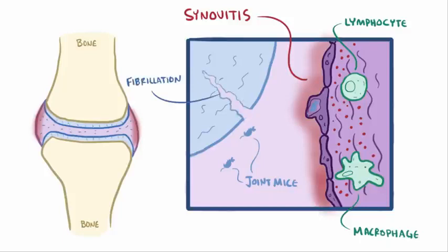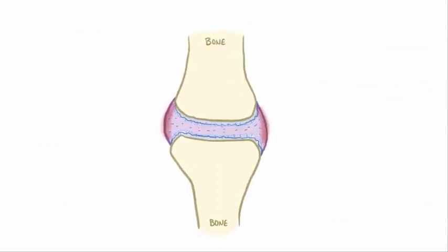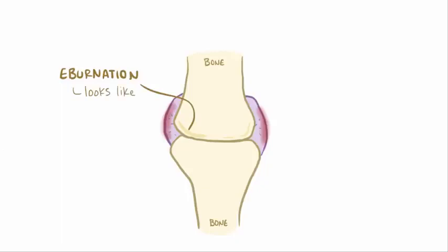Also, fibrillations form, essentially these cracks or clefts on what used to be smooth articular surface. The cartilage continues to erode away until the bone is exposed, allowing it to rub with the other bone, which causes bone eburnation, making it look like polished ivory.